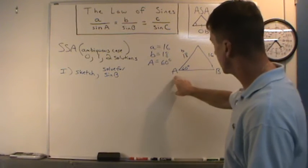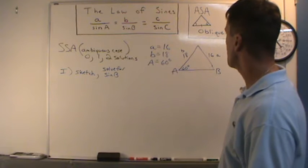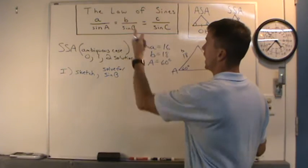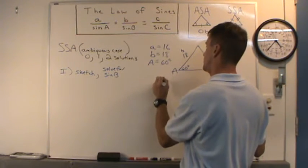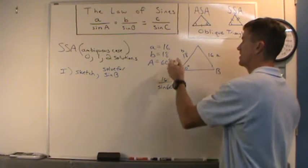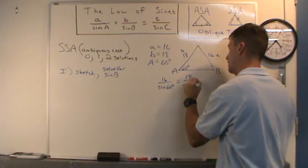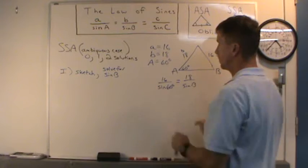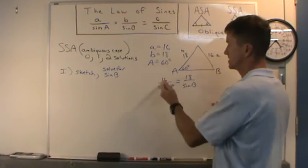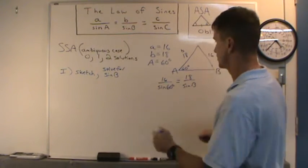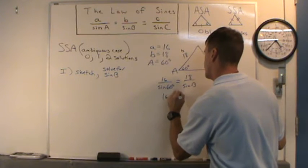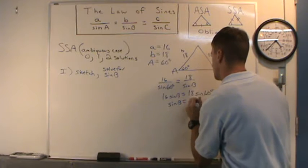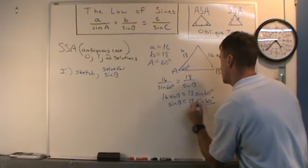Cross-multiplying: 16 times sine B equals 18 times sine 60. Dividing both sides by 16, sine B equals 18 times sine(60°) divided by 16. On the calculator in degree mode: 18 times sine(60), close parentheses, divided by 16, gives approximately 0.9743.